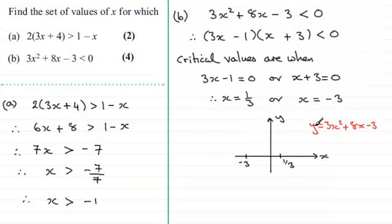It's going to be a parabola, a positive parabola, that's a U shape, and it's going to come down through the minus 3, drop below the x axis and then start to come up through the 1 third, looking something like that.